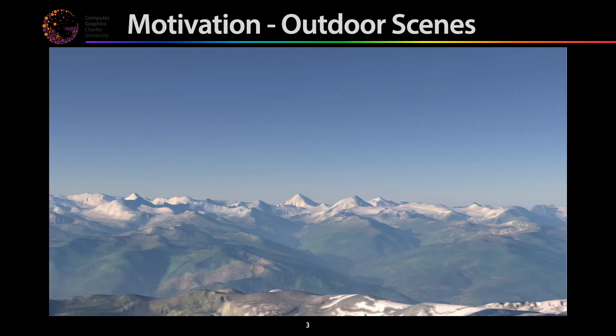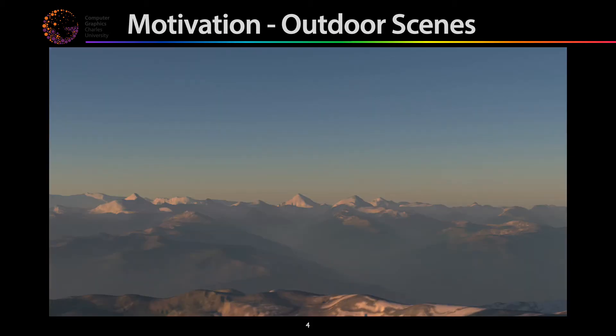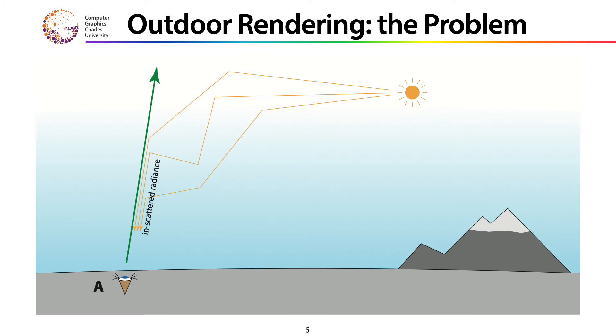So, what is this paper about? It's about outdoor rendering, where the dominant light source is of course the solar disk, but a very significant part of the illumination and appearance in the scene is provided by the sky dome — in other words, the atmosphere that surrounds our planet, both via in-scattering and via attenuation, providing the highly varying appearance of outdoor scenes throughout the course of a day. And of course, this is a well-known problem in computer graphics.